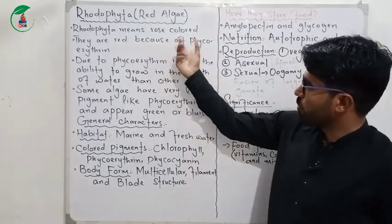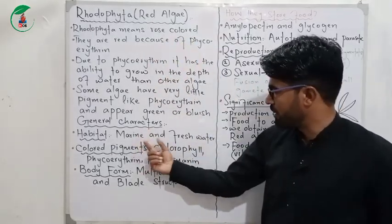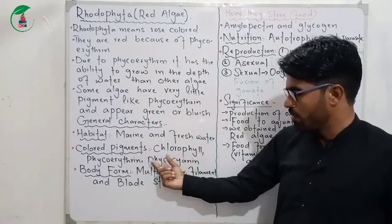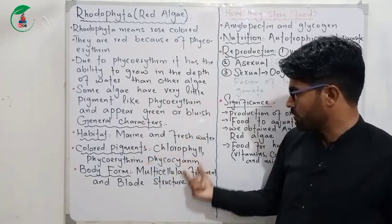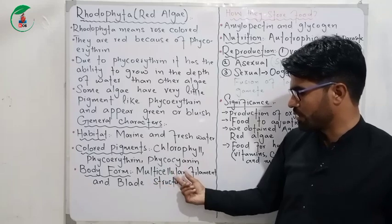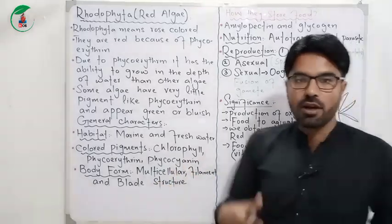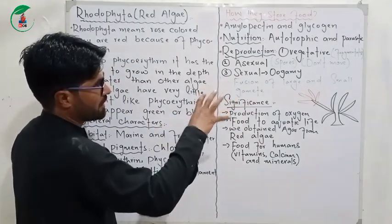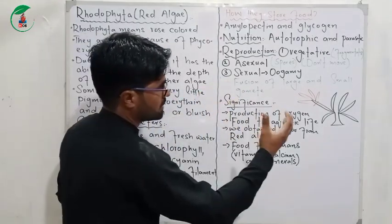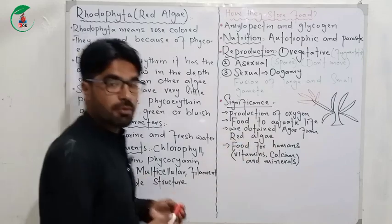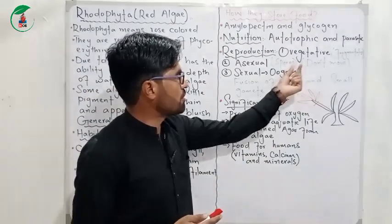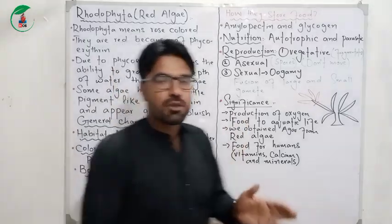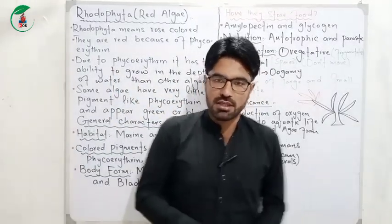A quick overview: Rhodophyta has rose colour, habitat in fresh and marine water, colour pigment phycoerythrin, multicellular body structure, food storage as glycosin and amylopectin, nutrition autotrophic and parasitic, and reproduction includes vegetative, asexual, and sexual methods. Thank you.